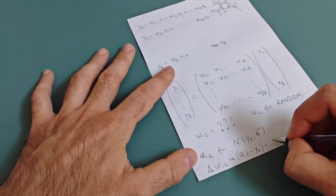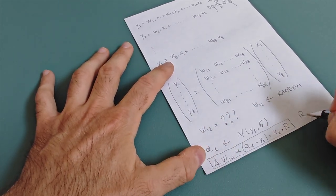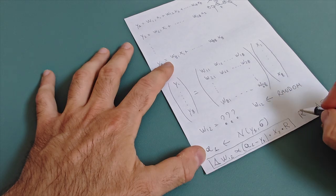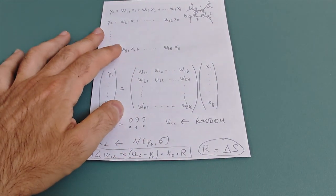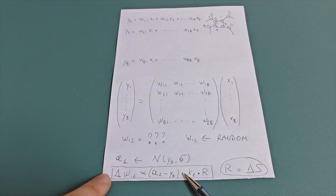This policy is stochastic, which means it does not always produce the exact same action for the same state. Instead, the policy outputs the mean of a normal distribution, and the final action is sampled from that distribution.